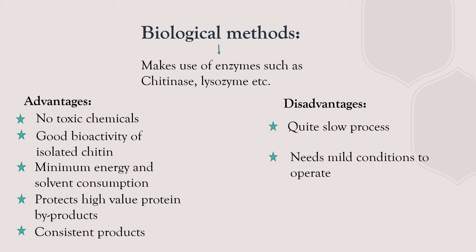Biological methods are what every scientist is hoping to use. They make use of enzymes such as chitinase, lysozyme, and several others. Chitinase is the specific enzyme that breaks chitin, though some other enzymes can also break it. The advantages are: no toxic chemicals, good bioactivity of the chitin, minimum energy and solvent consumption, and high-value proteins inside the crude chitin are protected. Products are consistent for a particular chitinase used.